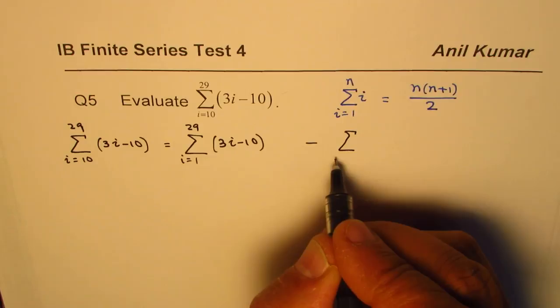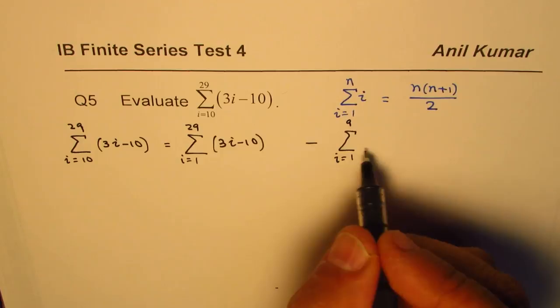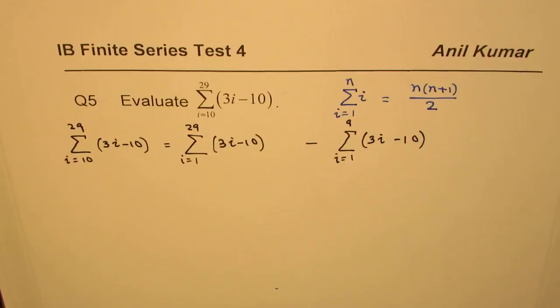And from it, take away the sum of first nine terms. So from i equals 1 to 9, if you take away that, then you get the right answer. Do you get an idea? So that is key for solving or finding or evaluating this summation.